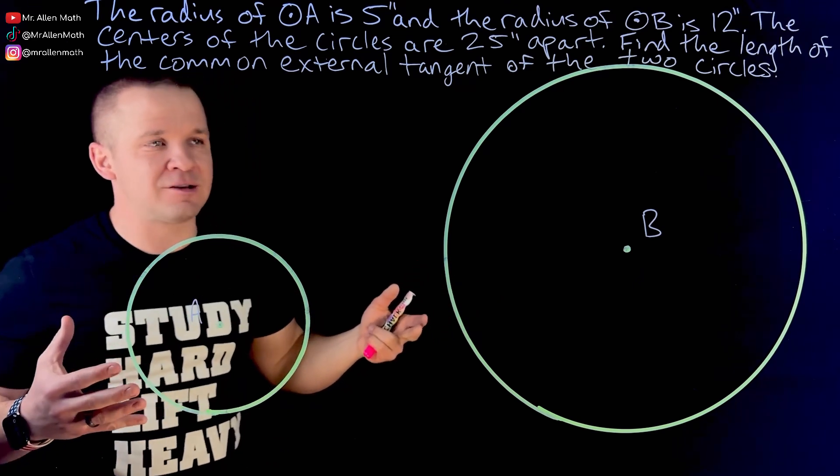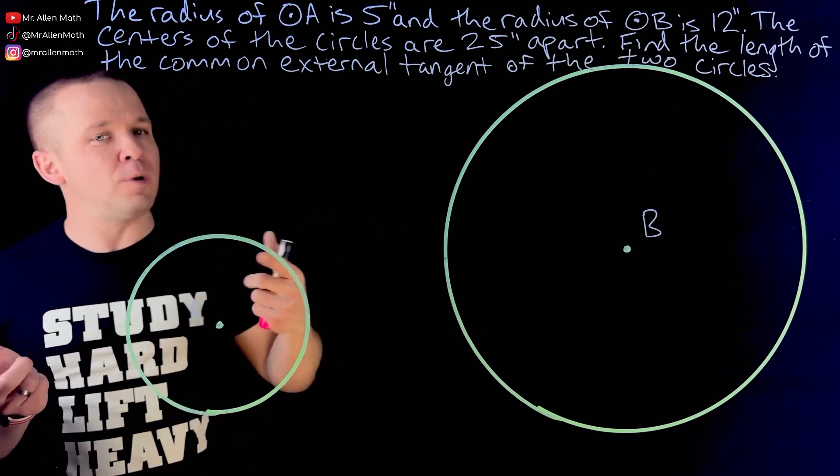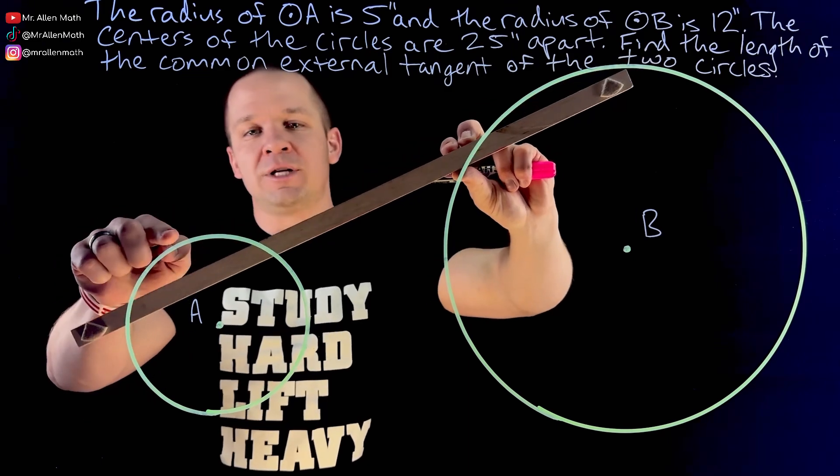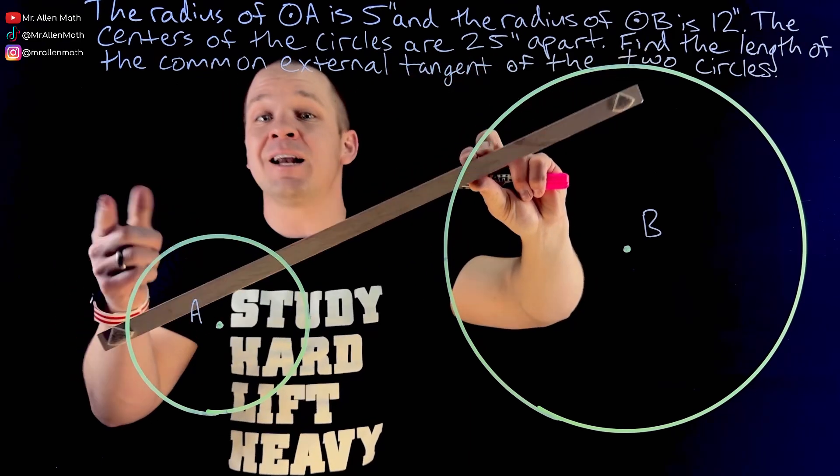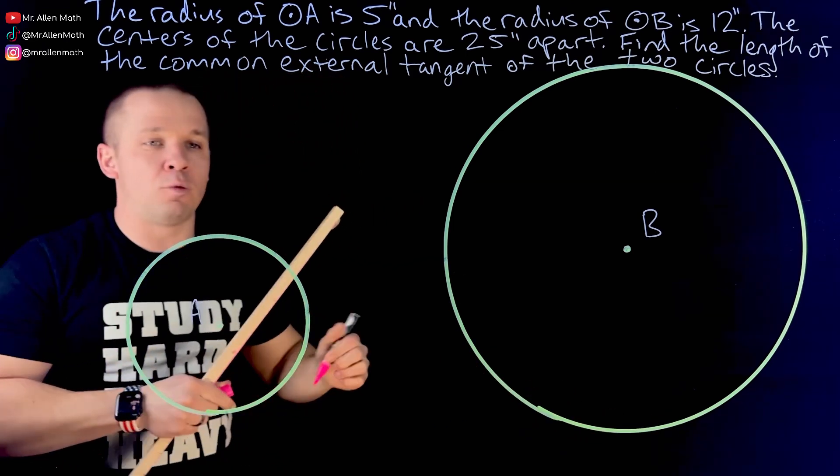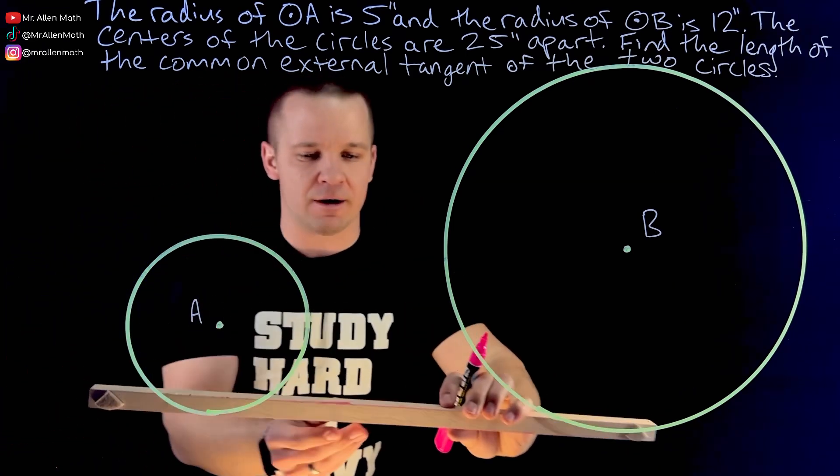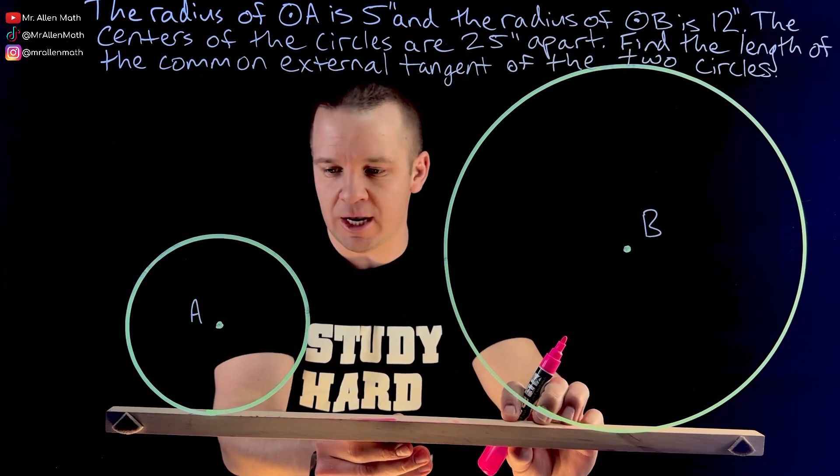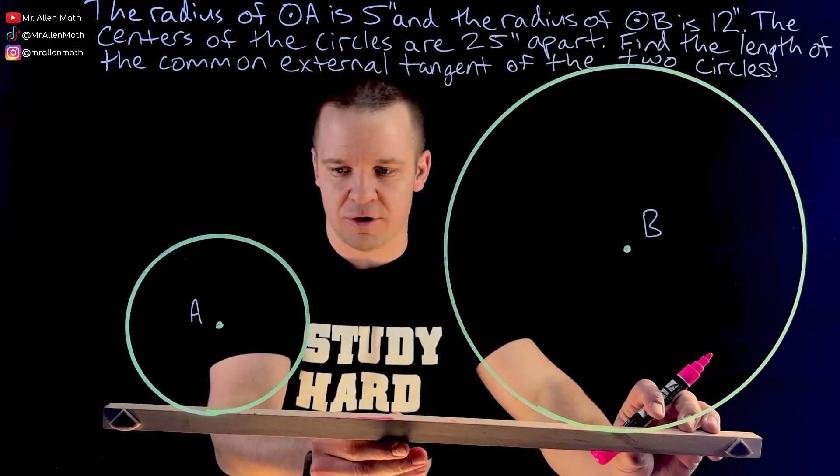But what's a common external tangent? There's actually two ways you can draw this one. I could draw it up here, tangent to both circles, connect that line, I want that length, or you could draw it down here. I'm actually going to favor the one on the bottom but you can do whatever you'd like. So I'm just going to get my straight edge here and I'm going to connect the two circles at the bottom.